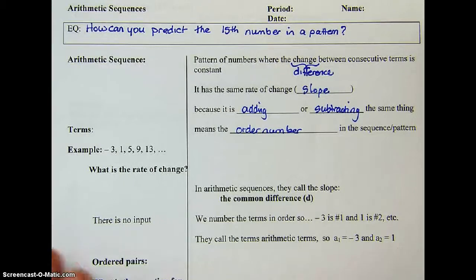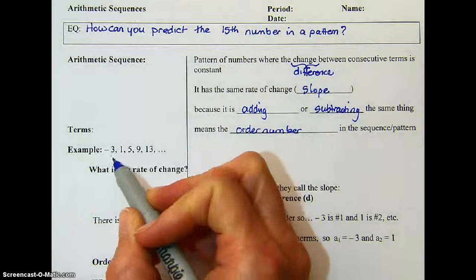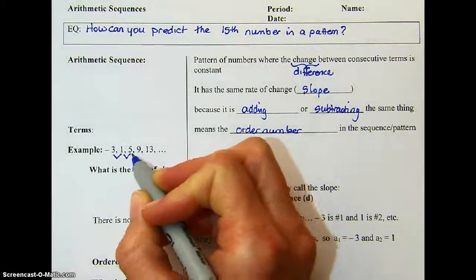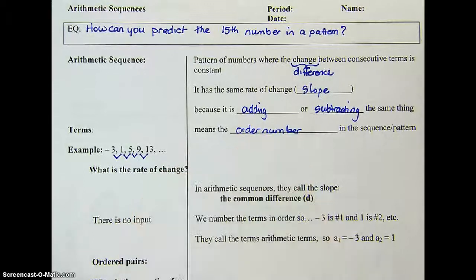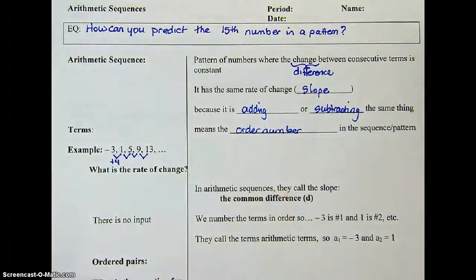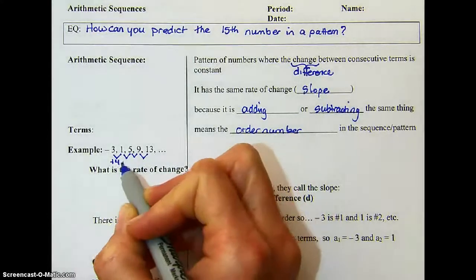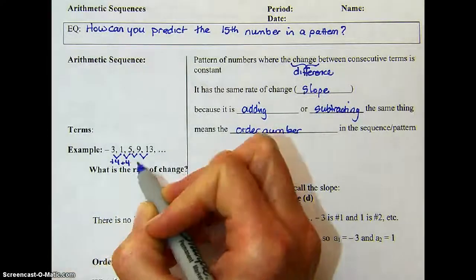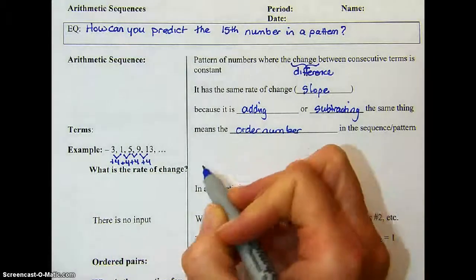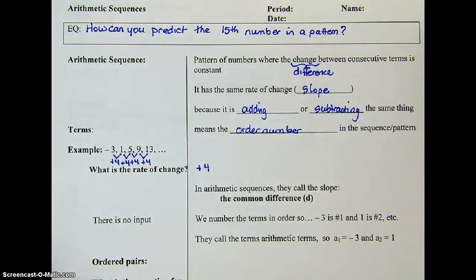When we're given a series, we need to make sure that it is arithmetic — that the same thing is changing between the terms every time. So we're going to look to see what is happening between each pair of numbers and make sure it is the same every time. It looks like I am adding 4 to get from -3 to 1, then adding 4 again to get 5, adding 4 again to get 9. It's the same rate of change every time, and the rate of change is positive 4.